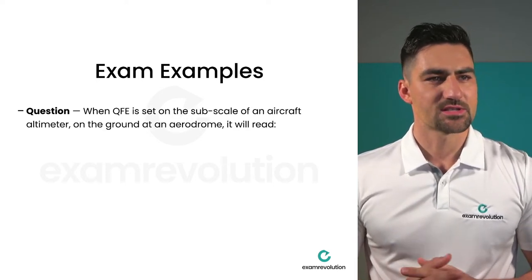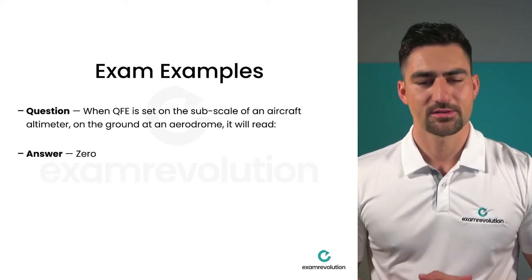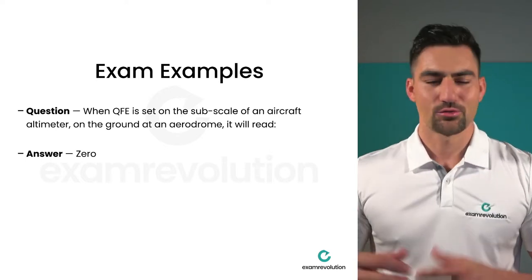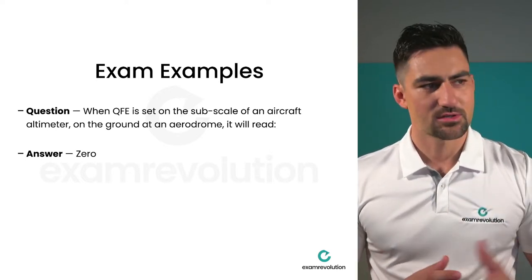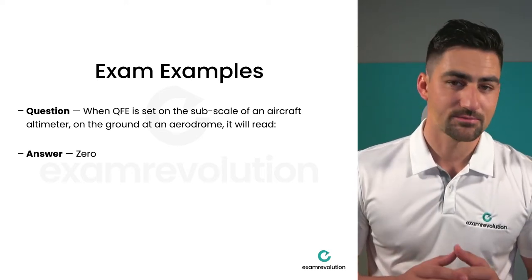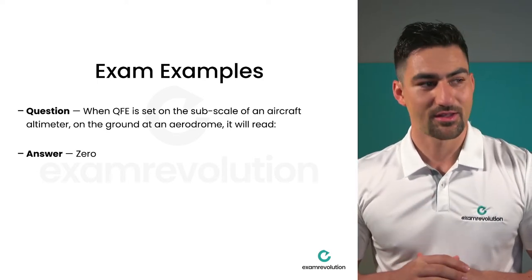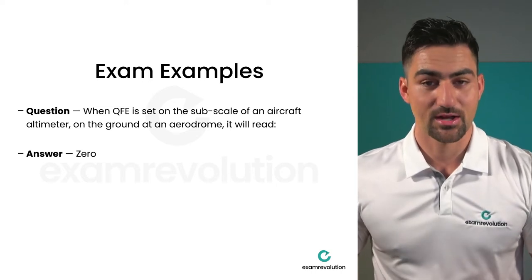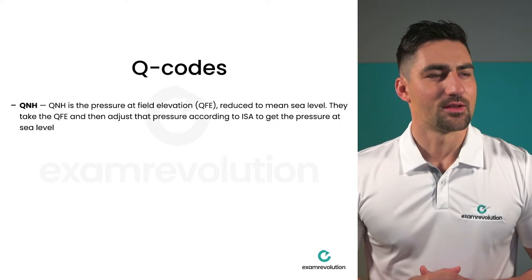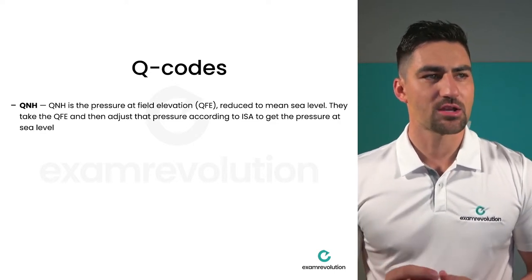When QFE is set on the subscale on the ground at an aerodrome, the altimeter will read zero feet. QFE is not used much in everyday flying — it's mainly used to determine height above the aerodrome and is more commonly used by the military for exercises. When airborne with QFE set, the reading shows height above the aerodrome.